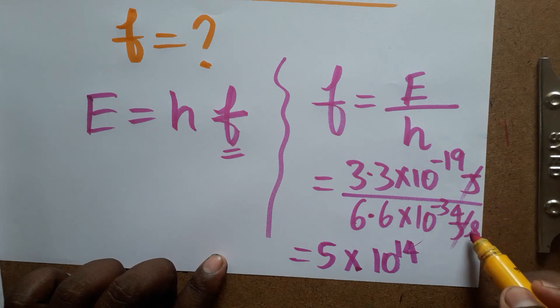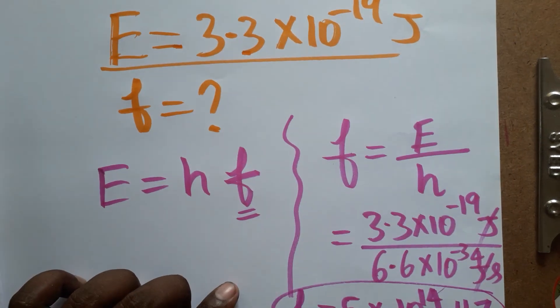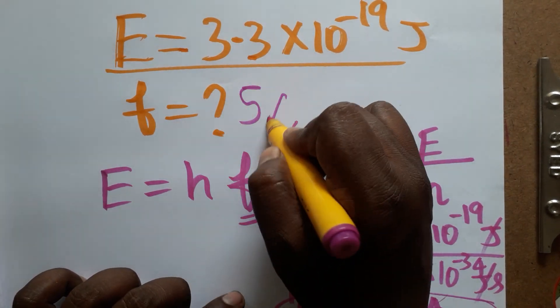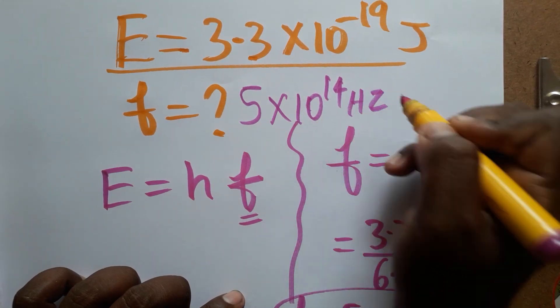So frequency is 5 into 10 power 14 hertz. From energy we calculated what is the frequency. Frequency is here 5 into 10 power 14 hertz. Thank you for watching my channel.